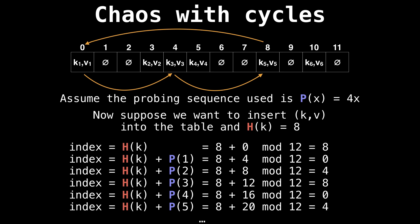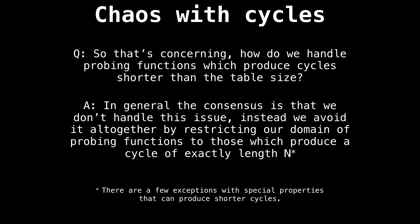Although we have a probing function, it does not work. In this particular situation, the probing function is flawed. So that's quite concerning. Because not all probing functions are viable. They produce cycles which are shorter than the table size. How do we handle this?